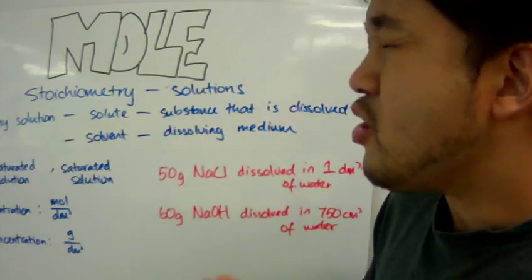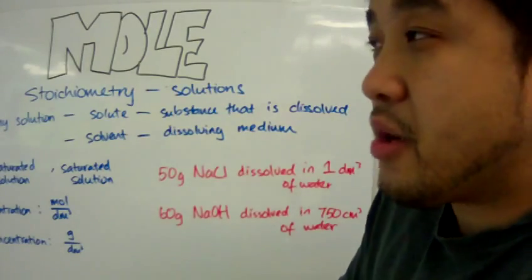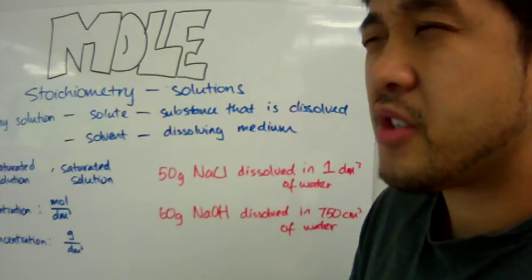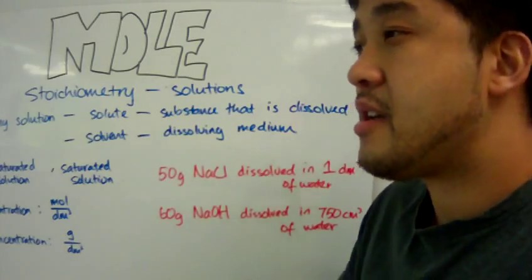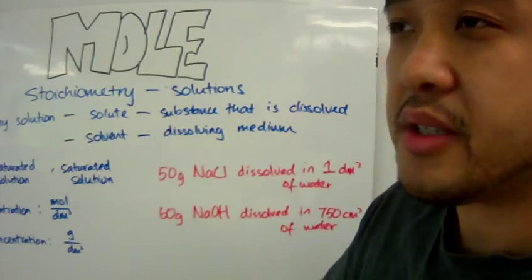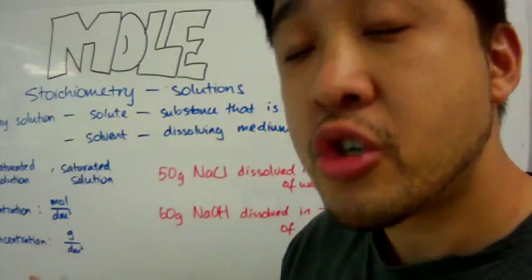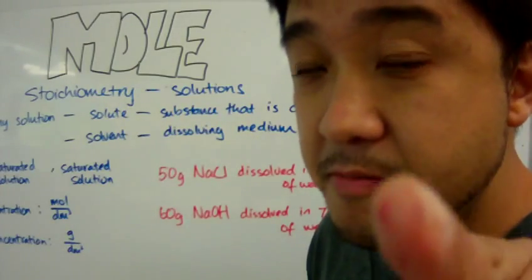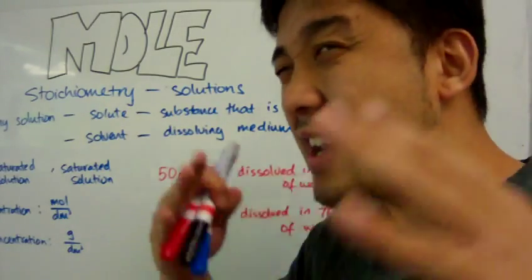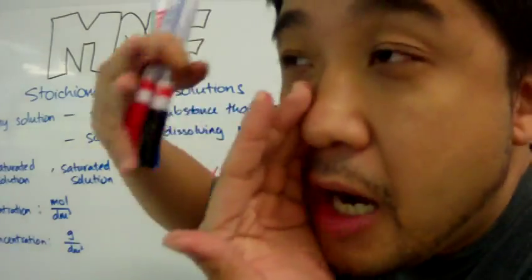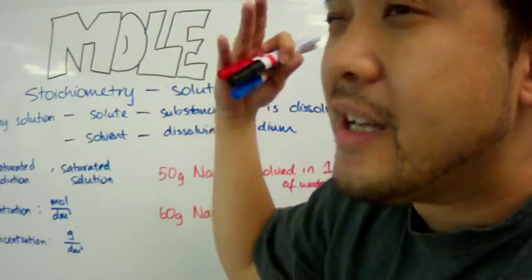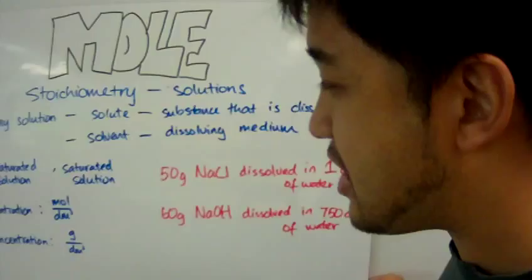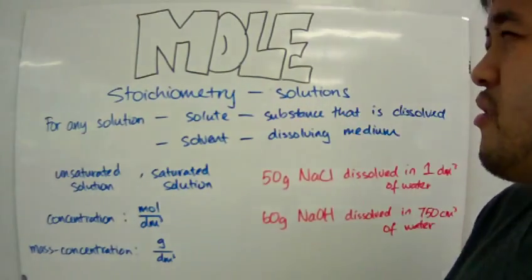Usually you will associate that the amount of solute is less than the amount of solvent. While this is usually true and is always true for IGCSE, it's not entirely true all the time — but that's okay, this is just IGCSE.